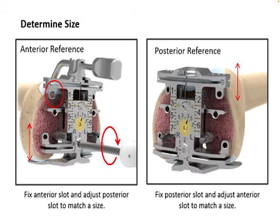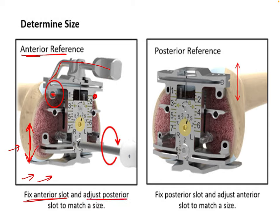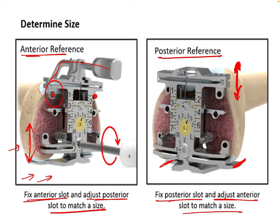To summarize: in anterior referencing, we fix the anterior cut and adjust the posterior condyle cut. The complication relates to the size of the posterior condylar cut, which affects the posterior condyle offset and range of motion — knee flexion may increase or decrease. In posterior referencing, we fix the posterior point and the anterior cut is variable. The complications are: cutting too little causes overstuffing of the patella, and cutting too much causes notching of the anterior femoral cortex.